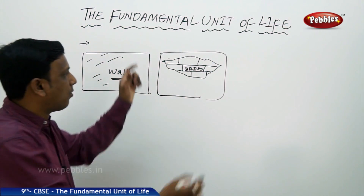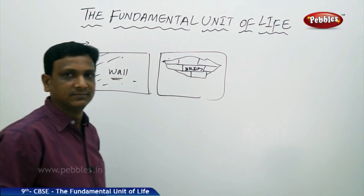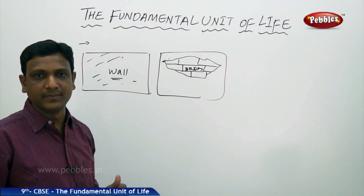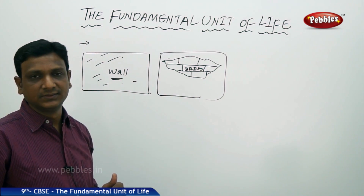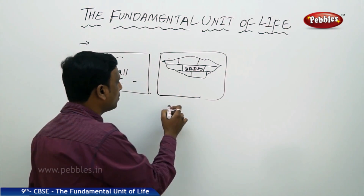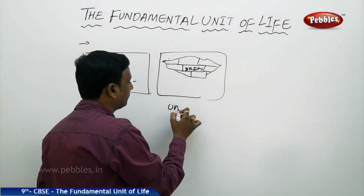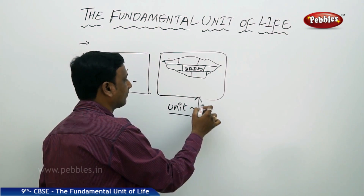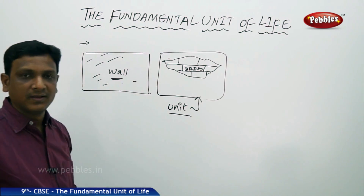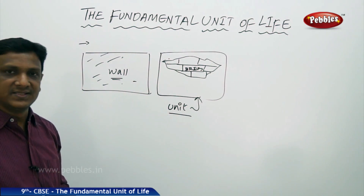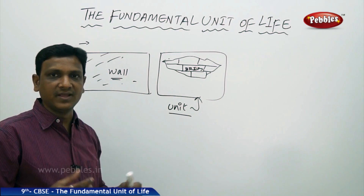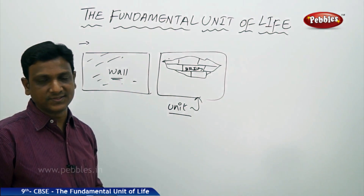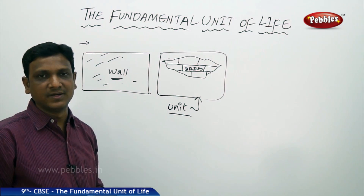A wall is made up of bricks — 100 bricks, 200 bricks, 500 bricks. So a brick is a unit which makes up the wall. In a similar fashion, living things are also made up of some basic units, fundamental units.